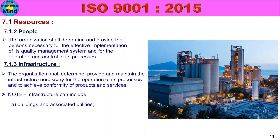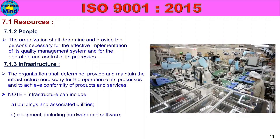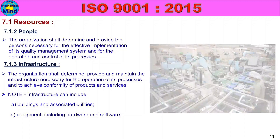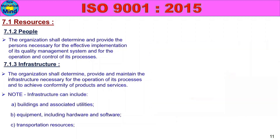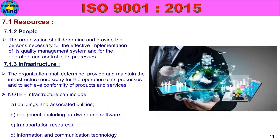Infrastructure can include: buildings and associated utilities, equipment including hardware and software, transportation resources, and information and communication technology.